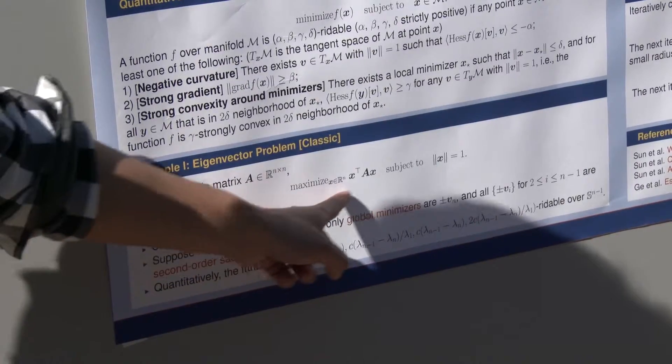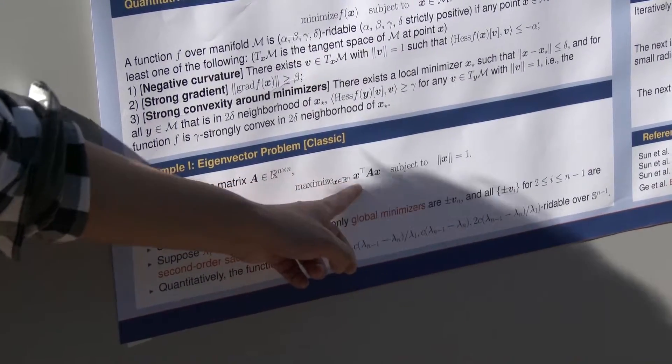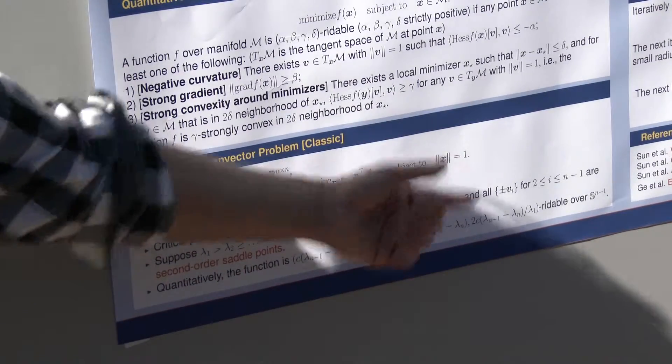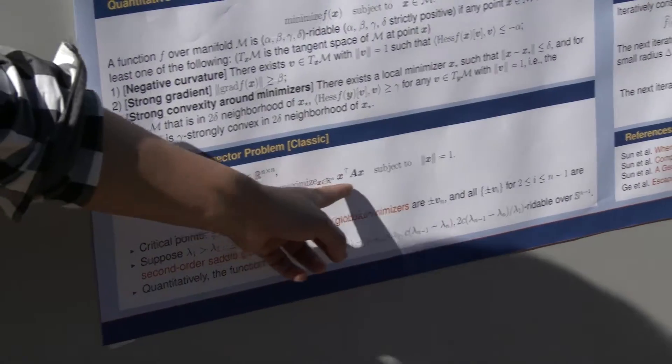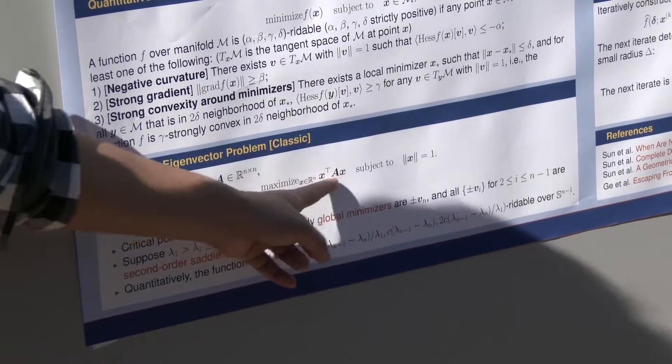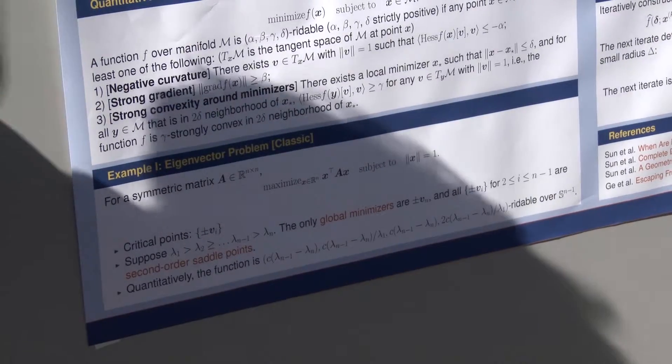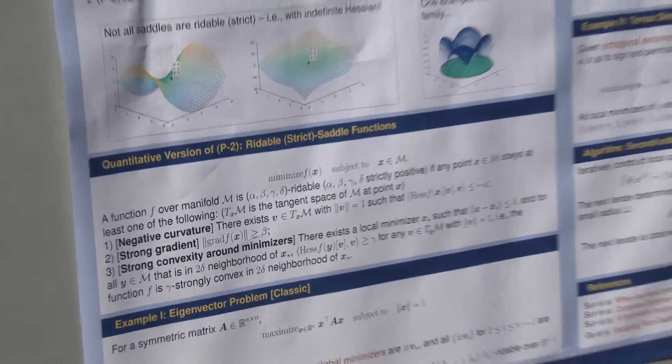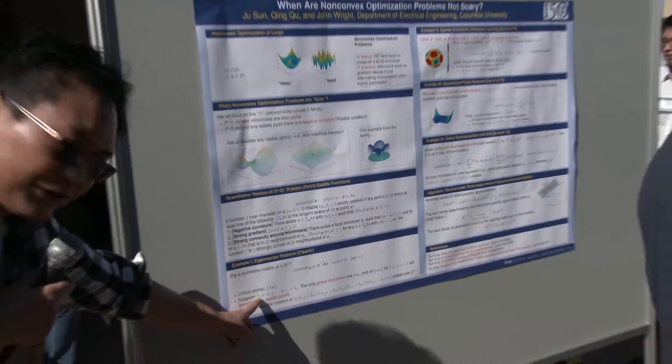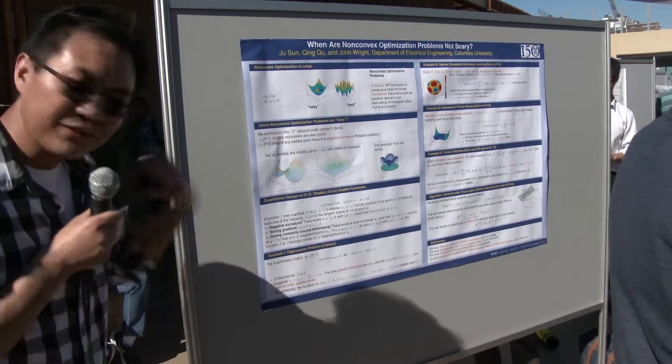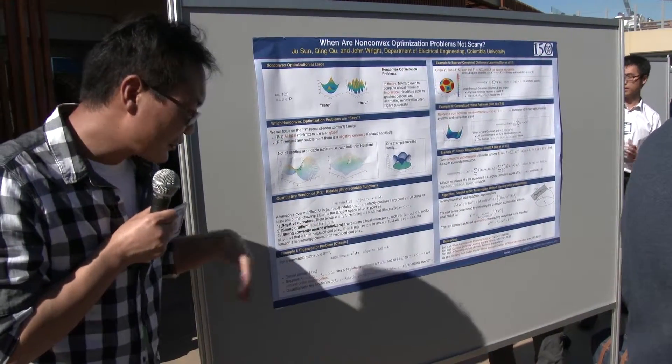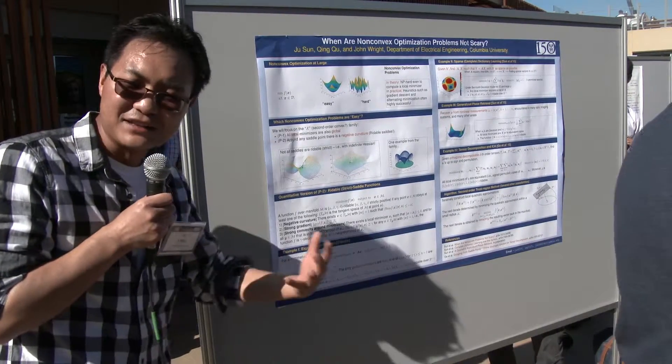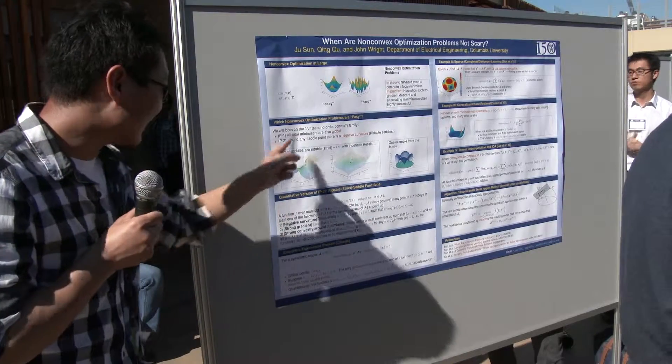In the eigenvector problem, you try to optimize this quadratic form subject to that your vector is living on a sphere. If you do a little bit of calculation, you'll find out that for this function, all the critical points are the eigenvectors and its negative copy. If you assume a little bit of a gap on the eigenvalues, the top and the bottom eigenvalues, all the global minimizers for this quadratic form are the bottom eigenvectors, and it's negative. That's the first one. All local minimizers are global.